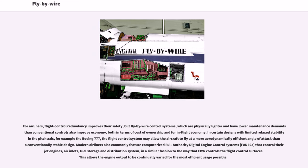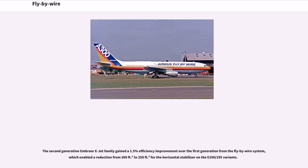Modern airliners also commonly feature computerized full-authority digital engine control systems that control their jet engines, air inlets, fuel storage and distribution systems, in a similar fashion to the way FBW controls flight control surfaces, allowing engine output to be continually varied for the most efficient usage. The second-generation Embraer E-Jet family gained a 1.5% efficiency improvement over the first generation from the fly-by-wire system, which enabled a reduction from 280 ft² to 250 ft² for the horizontal stabilizer on the E-190-195 variants.